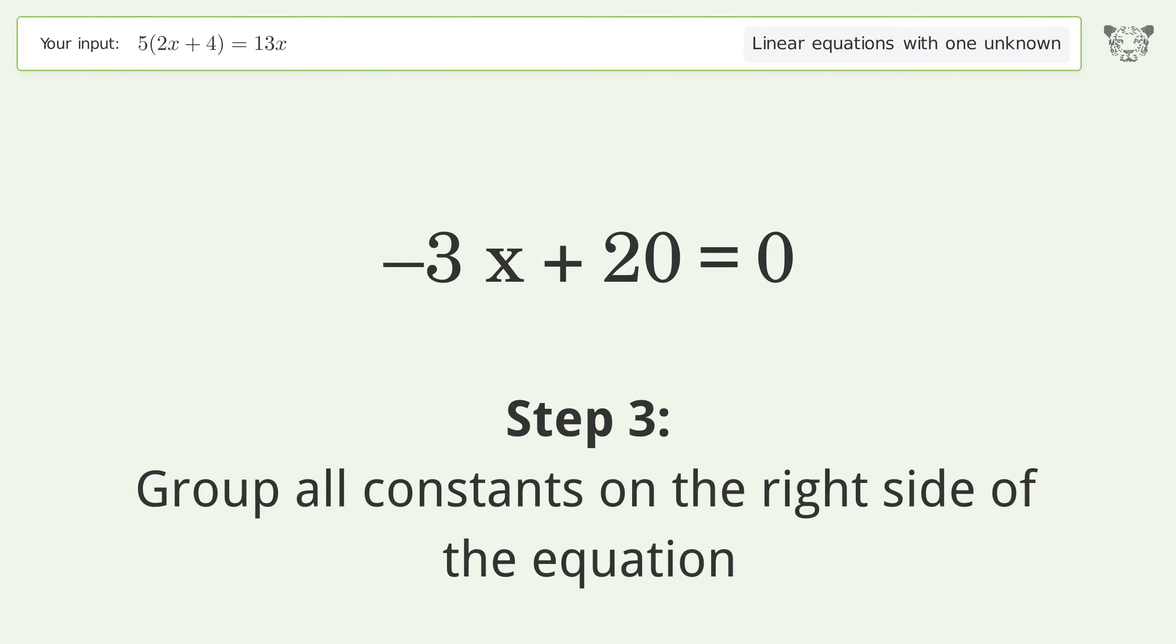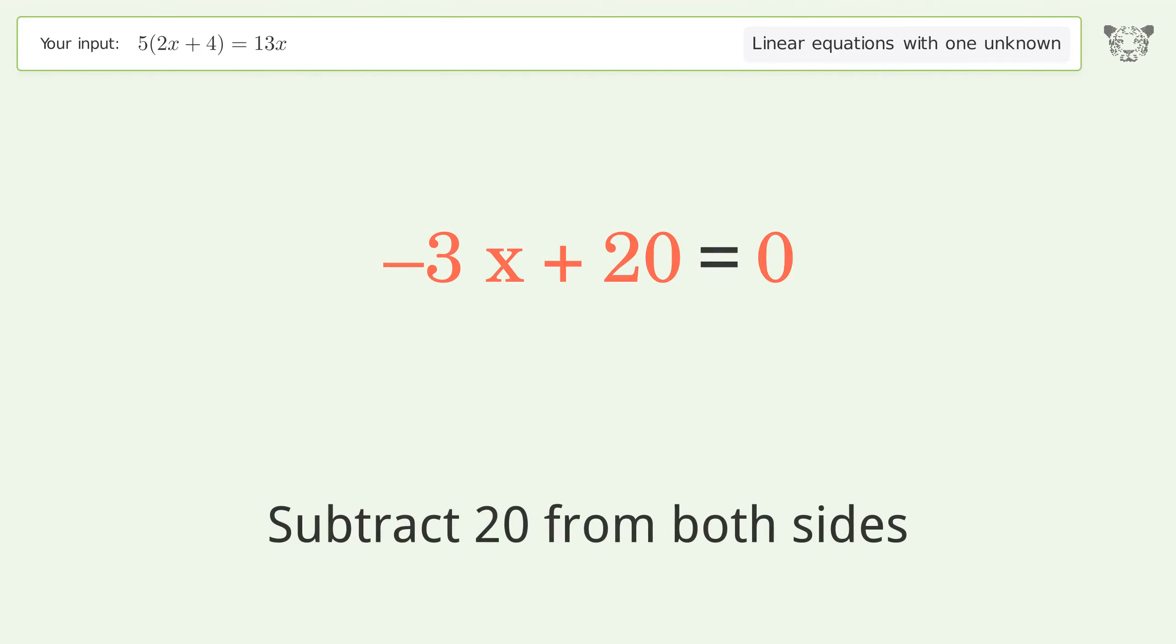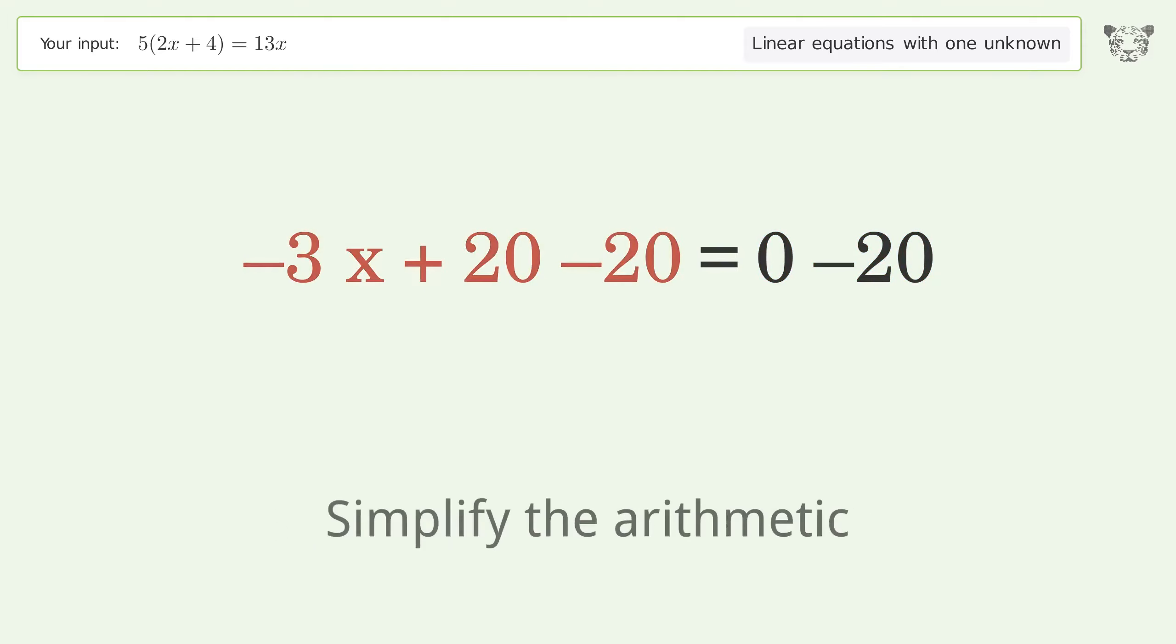Group all constants on the right side of the equation. Subtract 20 from both sides and simplify the arithmetic.